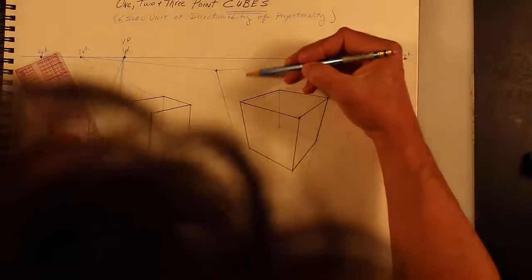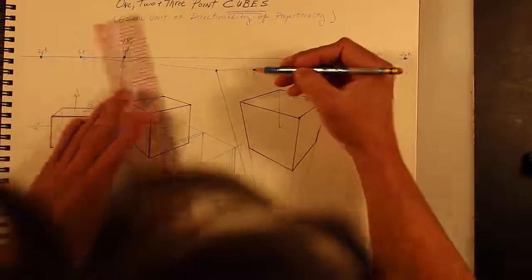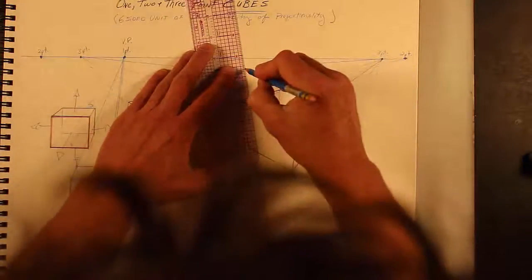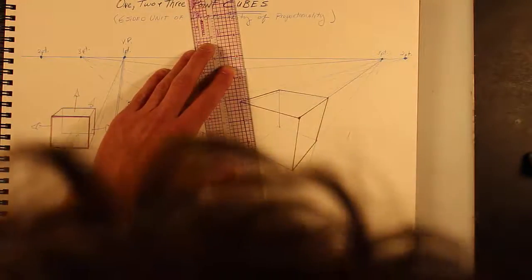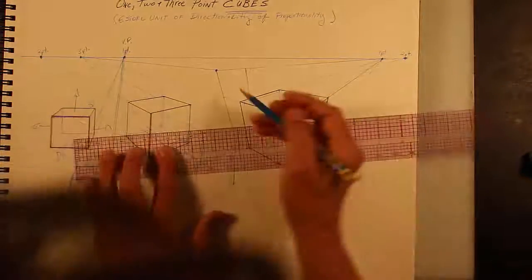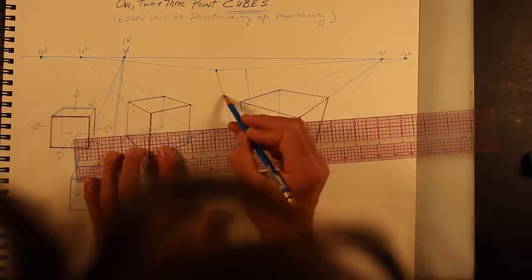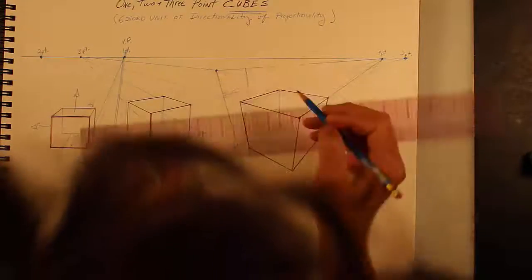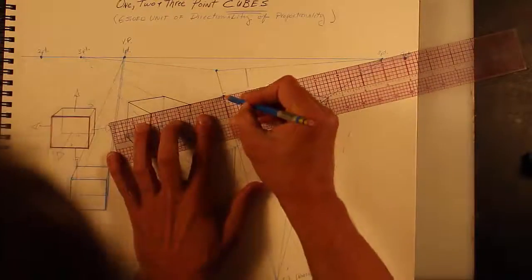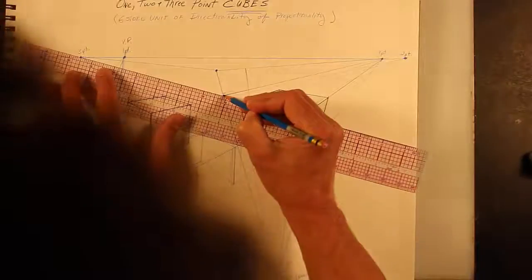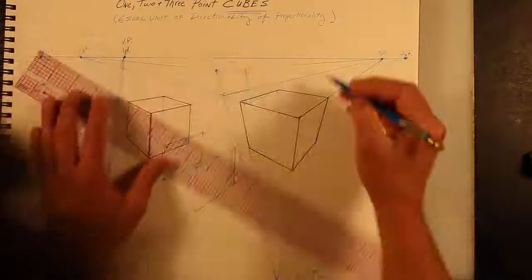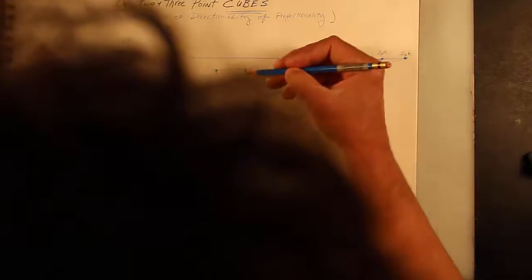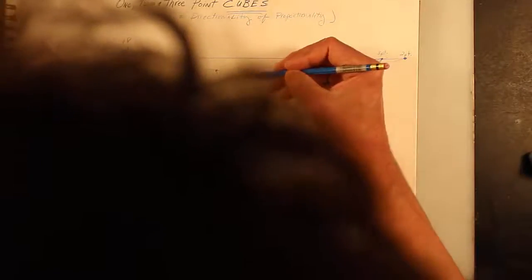And then how big do I want my cube? I'm going to make it kind of small so it doesn't intersect with other things. And then I can guesstimate, well, what's going to look like a square face. Let's guesstimate here. That's close. Maybe a little thinner. There.